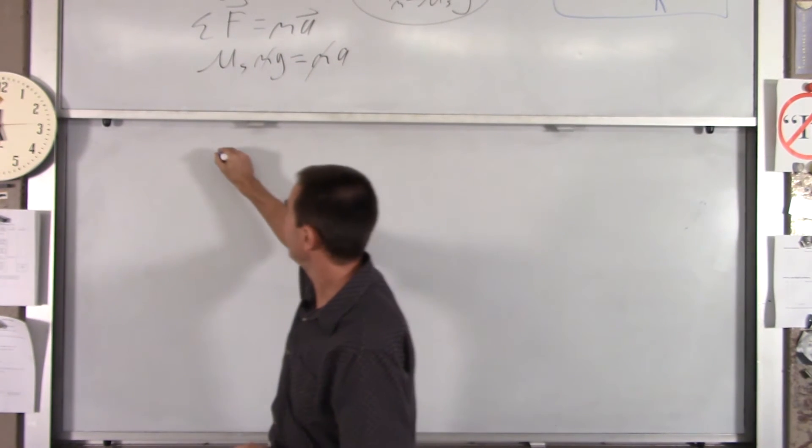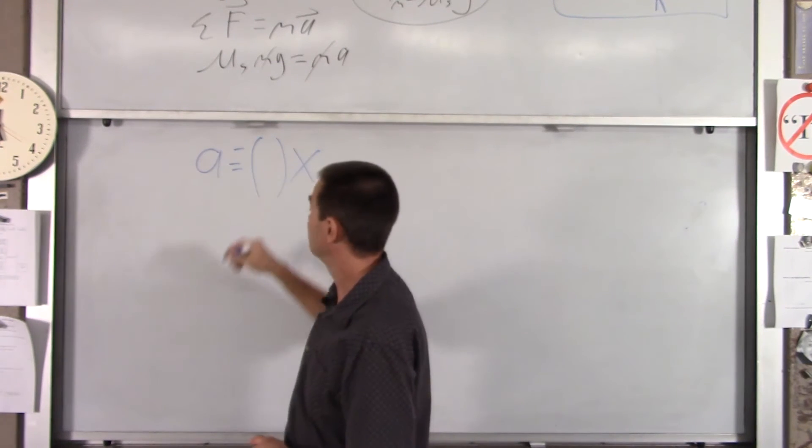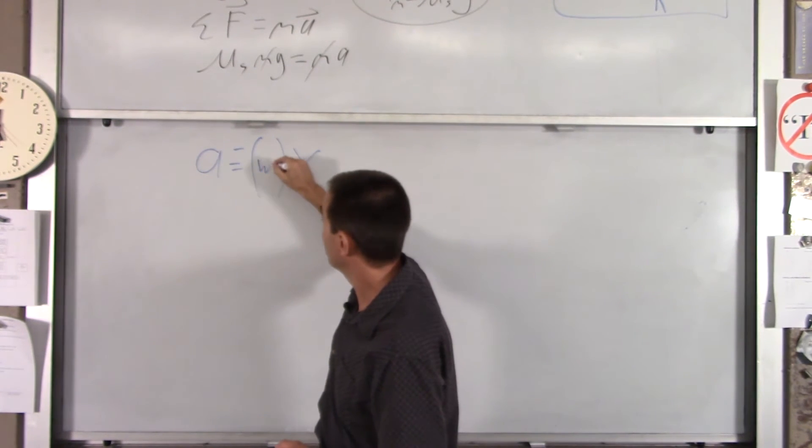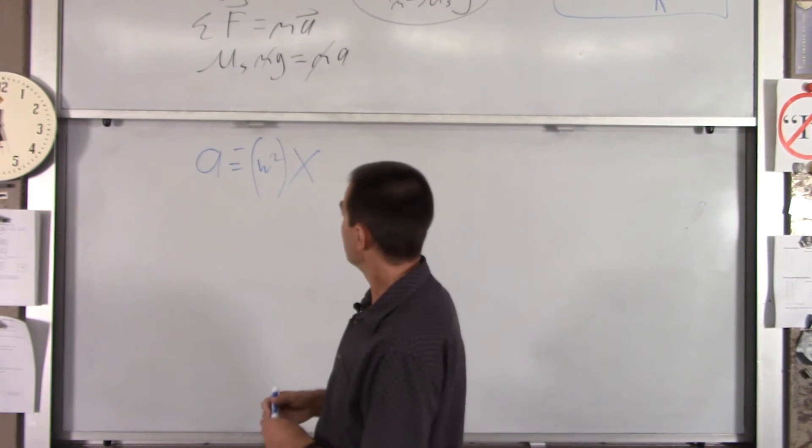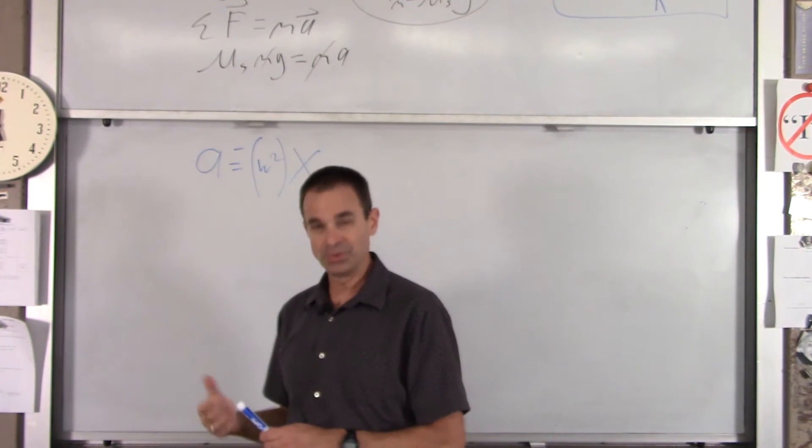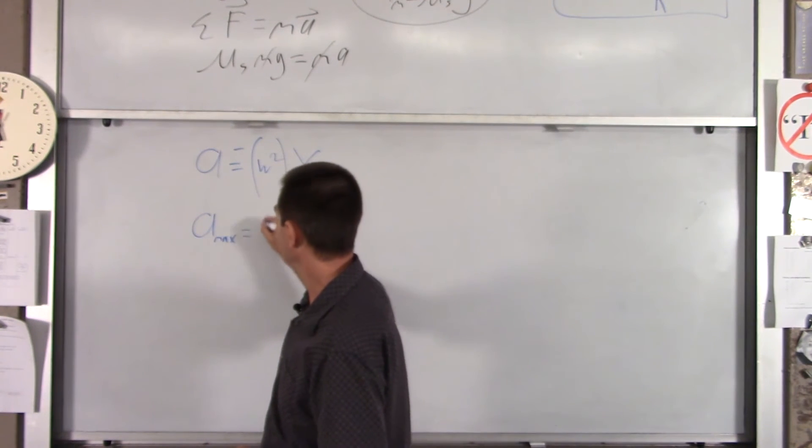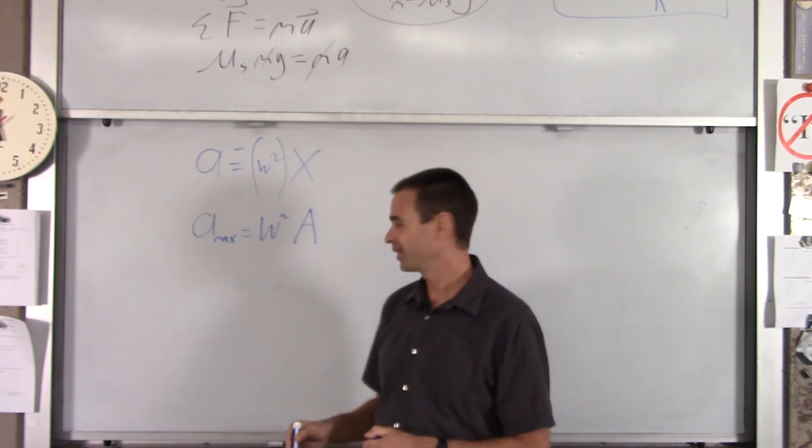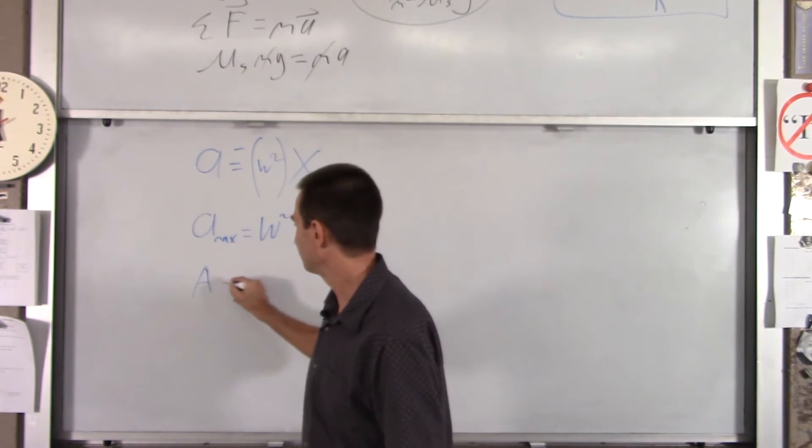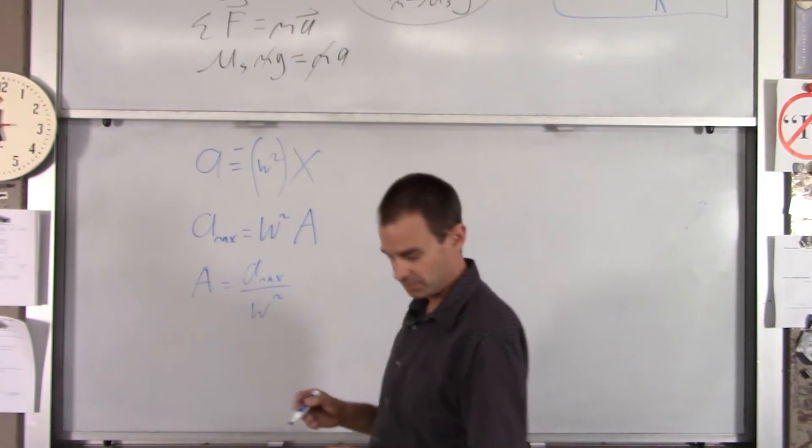Whatever is in front of that x, well, first of all, it should be negative. Whatever is in front of that x is omega squared. And then, to find the amplitude, we know that a max equals omega squared times the amplitude. So, the amplitude simply equals a max over omega squared.